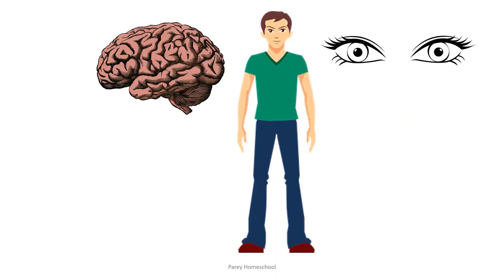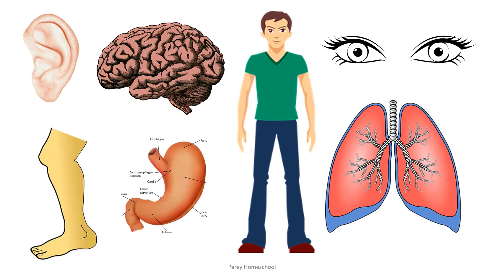So, children, this was all about the different parts of our body. Today we learnt about internal parts and external parts of our body. External parts are the parts which we can see with our eyes. Internal parts are located inside the body, so we cannot see them. This is how all the parts of the body help us to breathe, to digest, and to do different activities. In the next lesson, we will learn another topic. Till then, bye-bye.